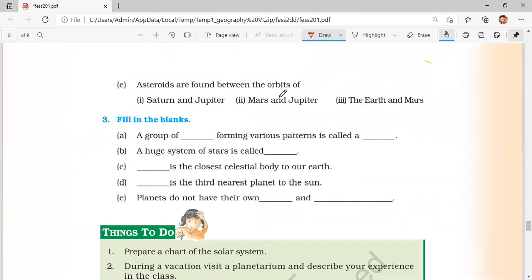Asteroids are found between the orbit of Mars, which is the boundary of inner planets, and Jupiter, which is the starting of outer planets. Terrestrial planets, also called inner planets. A group of stars forming various patterns is called a constellation.